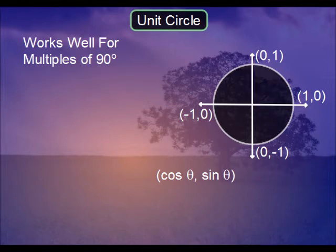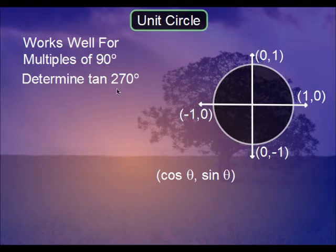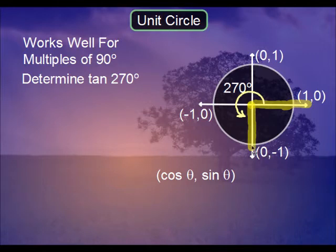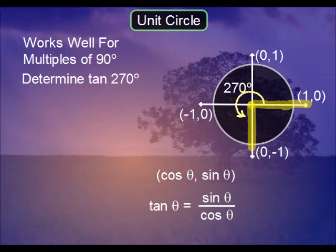Let's do a different angle. Let's determine tan 270 degrees. Whenever you're given sine, cosine, or tangent of any angle, the first thing you want to do is map out the angle. Notice the coordinates we fall on: (0, -1). Remember that cosine is the x value and sine is the y value, but tangent is the sine over the cosine. Thus you'll need both values, the -1 and the 0. That's -1 over 0 for the tangent, and since we have 0 in the denominator, it's better to write undefined.